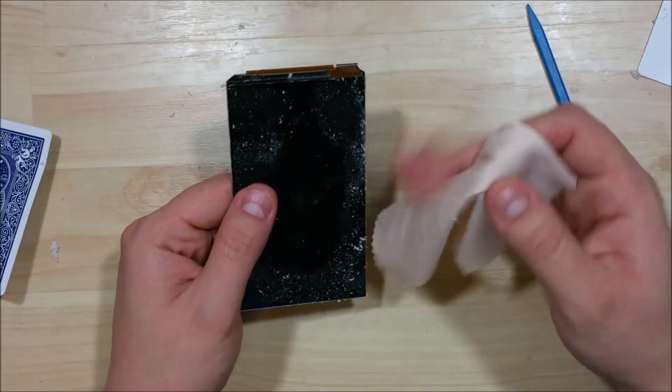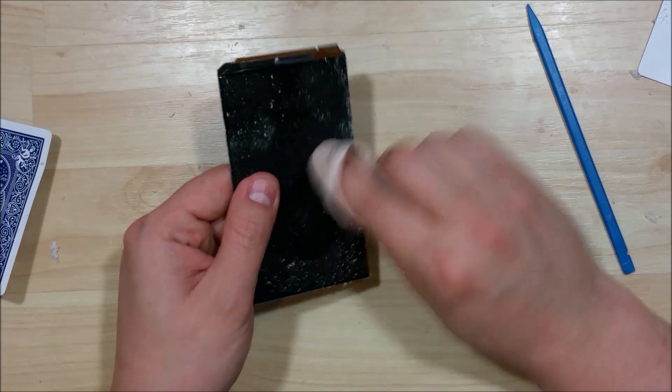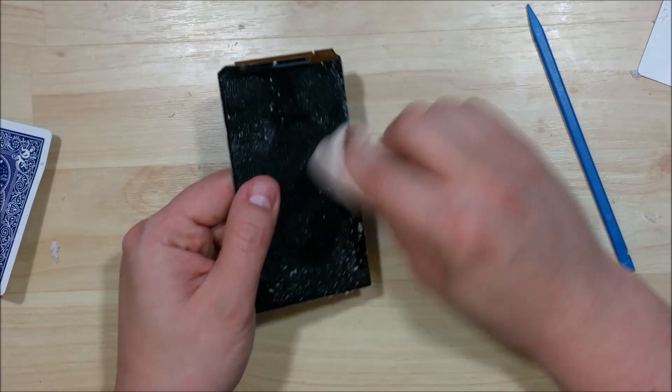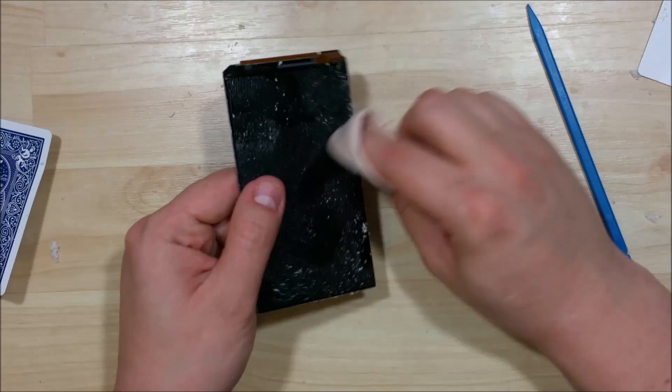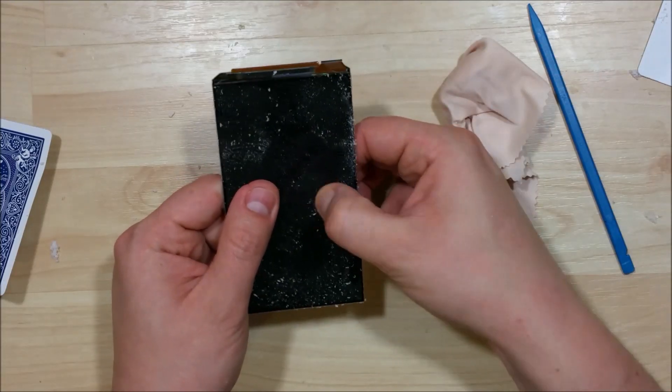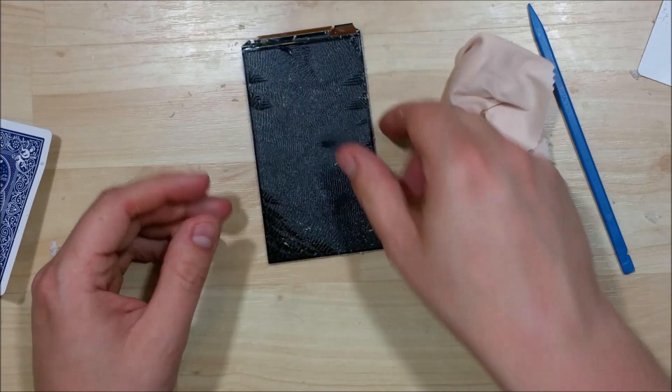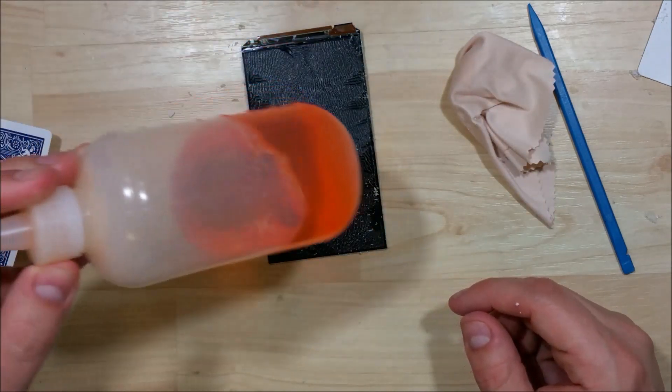Sometimes it will come off in chunks. So it looks like we're going to have to use some Goo Gone for this display actually. I'll just rub it back and forth a little bit here to see if we can make any progress. Not a whole lot. Looks like that would take an extremely long time. You can see I've made a little tiny right there in the middle.